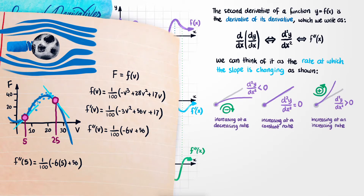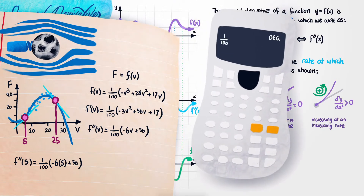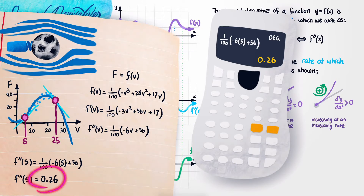I'll go ahead and substitute the right-hand side into a calculator. By doing this, we got a value of 0.26. This indicates that the force on the soccer ball is increasing at an increasing rate when the velocity is equal to 5.